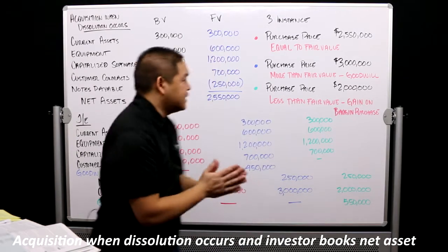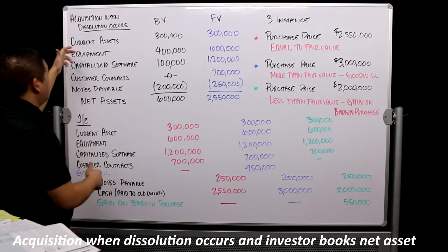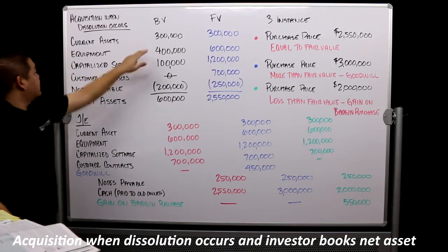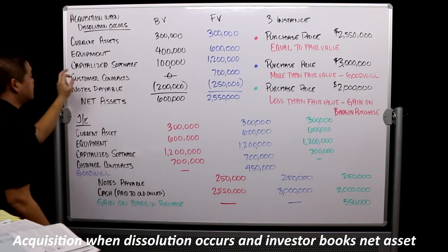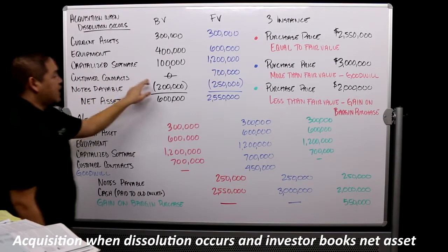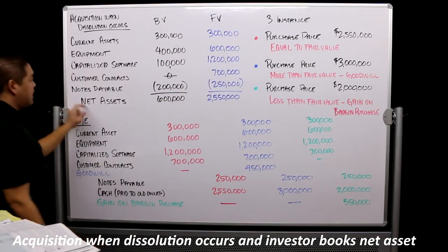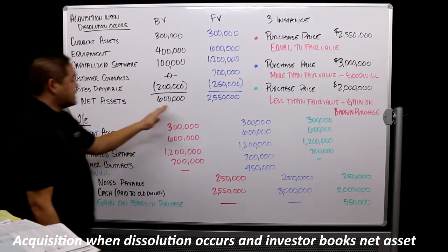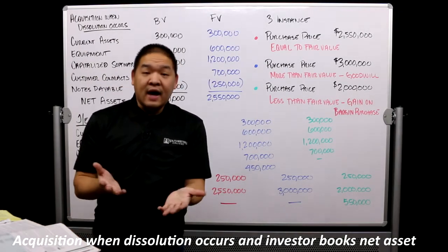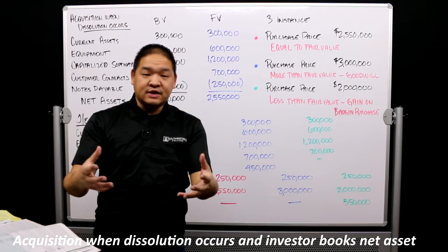Let's assume the investee has current assets of $300,000, equipment of $400,000, capitalized software of $100,000, customer contracts of zero, and notes payable of $200,000. So their net assets are $600,000 - that's what their balance sheet says.